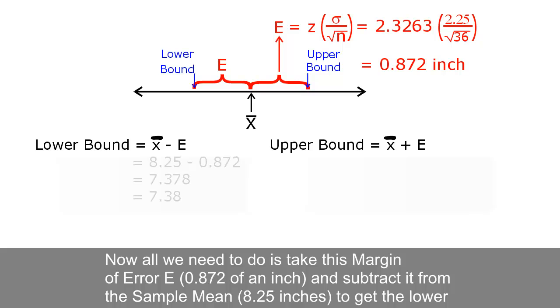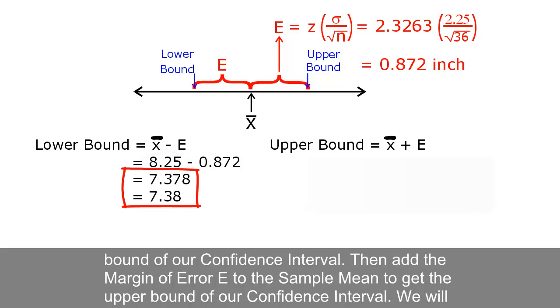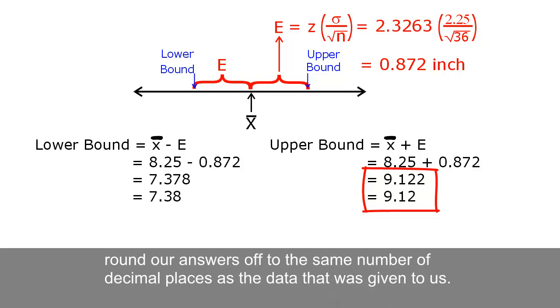Now all we need to do is take this margin of error E, 0.872 of an inch, and subtract it from the sample mean, 8.25 inches, to get the lower bound of our confidence interval. Then add the margin of error E to the sample mean to get the upper bound of our confidence interval. We will round our answers off to the same number of decimal places as the data that was given to us.